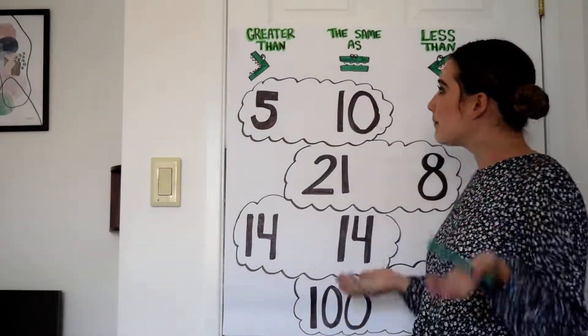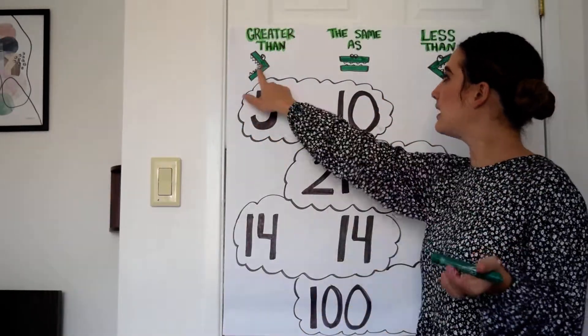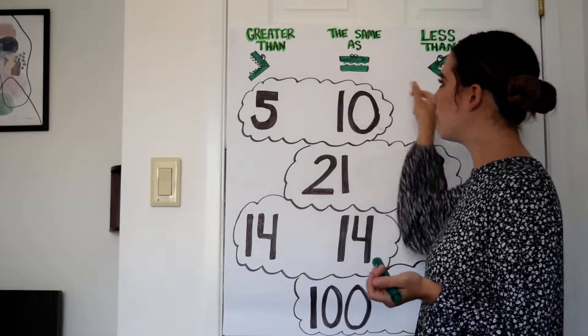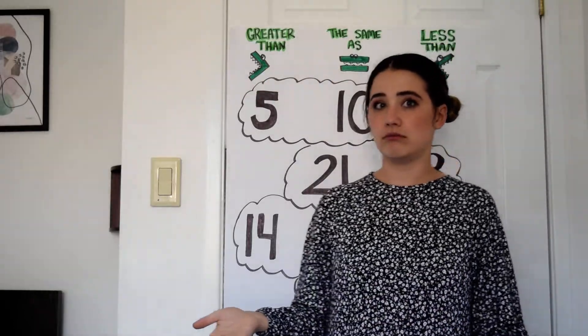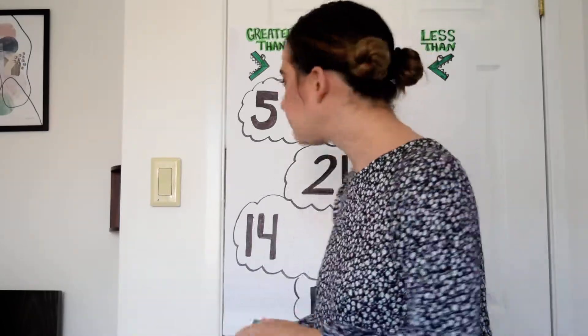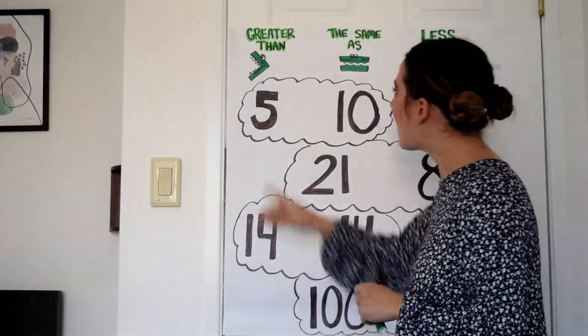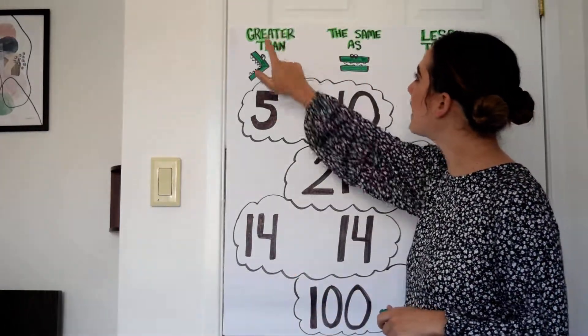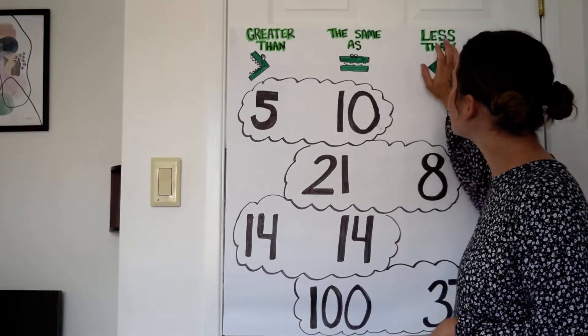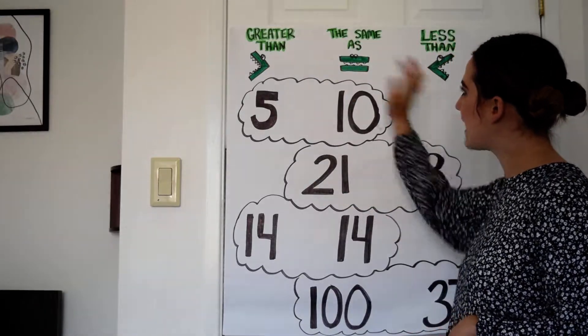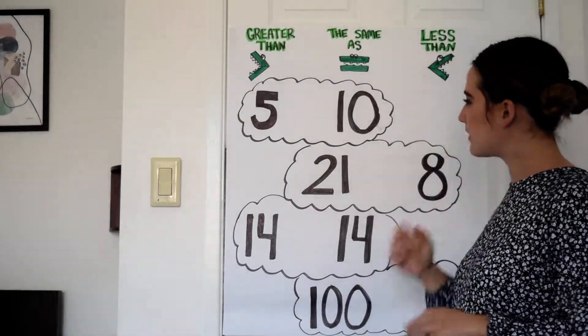When comparing numbers we need to figure out which number is the bigger number, which number is the smaller number, or if they're the same. That's why we have greater than, the same as, and less than alligator symbols.